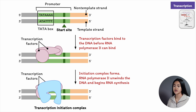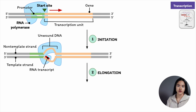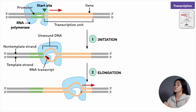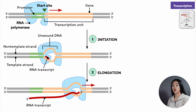Once transcription has begun, the transcription factors dissociate from the DNA and are available to start another round of transcription with a new RNA polymerase. That's initiation. The next stage is elongation of the RNA strand. RNA polymerase moves along the DNA, unwinding the double helix and exposing the nucleotides. Polymerase adds nucleotides to the 3' end of the growing molecule. The RNA molecule peels away from the template strand and the DNA double helix reforms with the non-template strand.